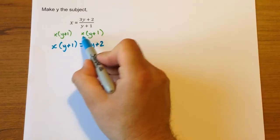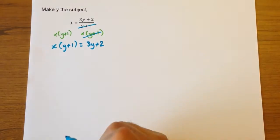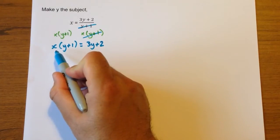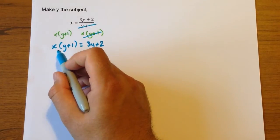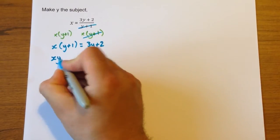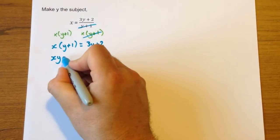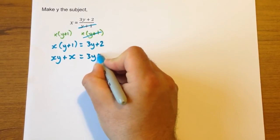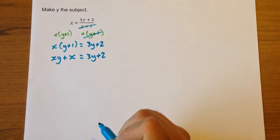You'll notice the top hasn't changed - multiplying by that has gotten rid of the fraction. Now we're going to multiply out this bracket. If you need to, you can use a grid. Otherwise, it's just x times y is xy, x times 1 is x, and that still equals 3y+2 because we haven't done anything to that side.